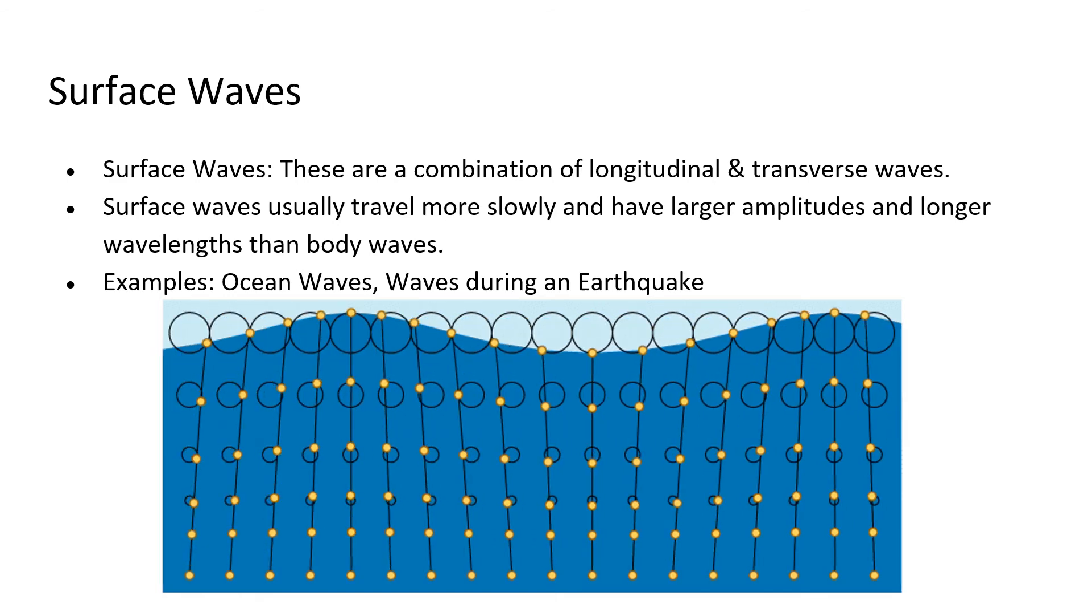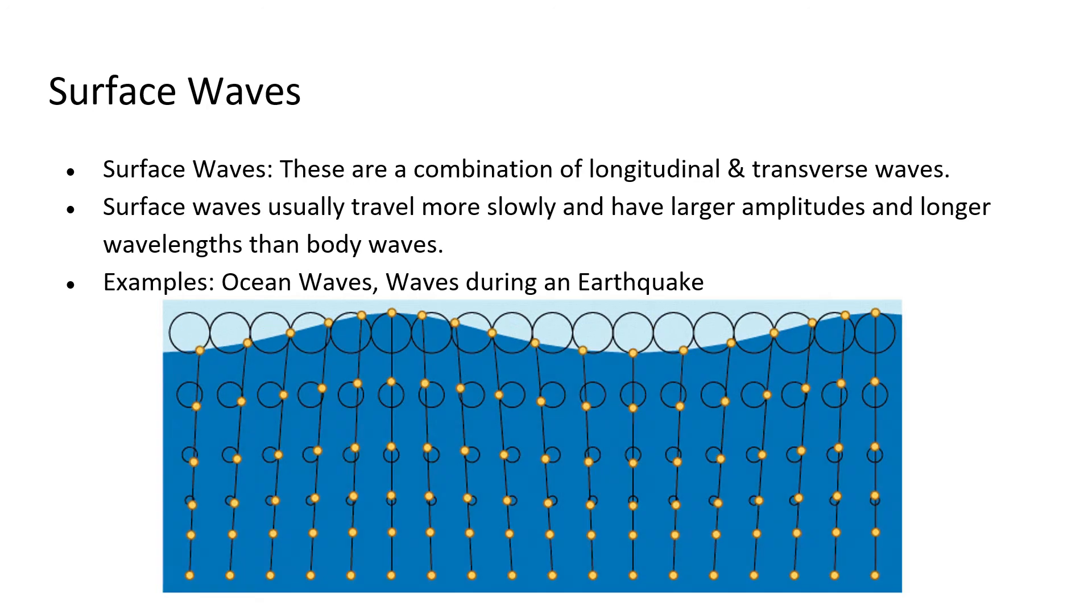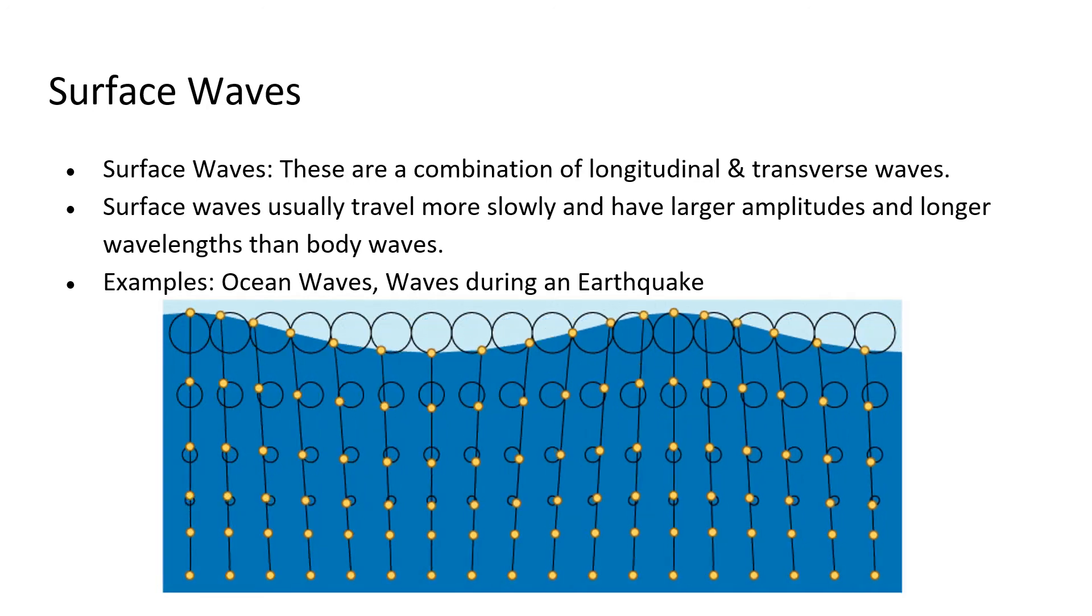Surface waves usually travel more slowly, have larger amplitudes and longer wavelengths than body waves. Amplitude refers to the height of the wave, and wavelength is the distance from two consecutive crests or two consecutive troughs.